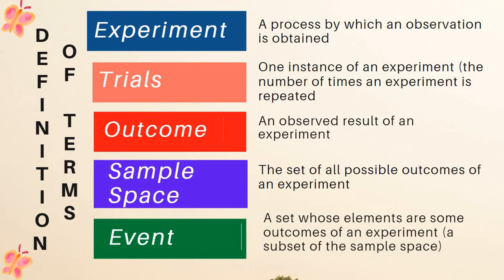Outcome is an observed result of an experiment. Sample space is the set of all possible outcomes of an experiment. And event is a set whose elements are some outcomes of an experiment. It is the subset of the sample space.